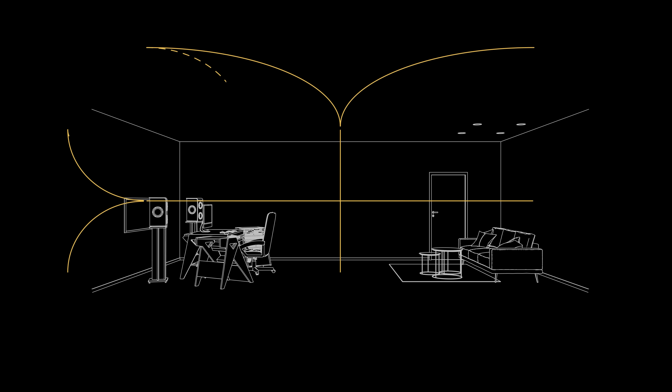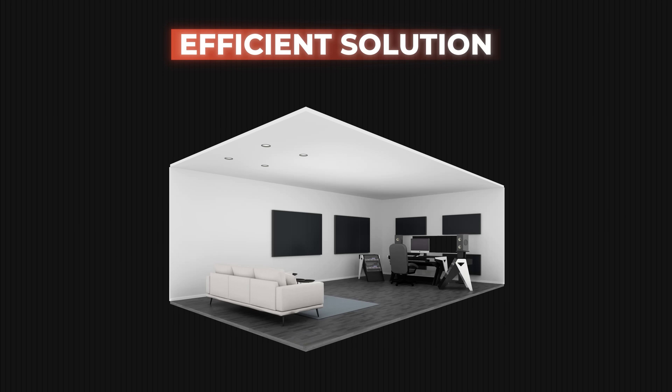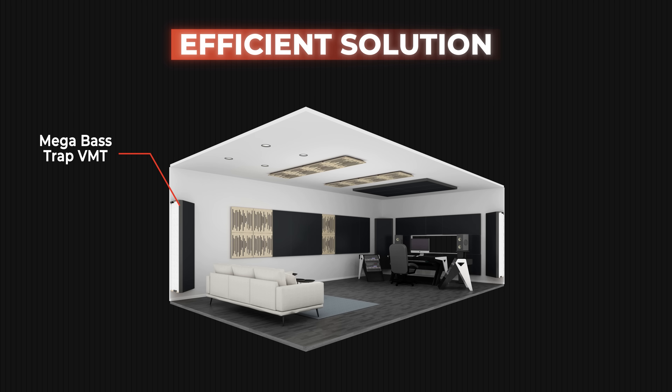Ever notice certain bass notes sound way too strong or disappear completely? That's caused by room modes, which amplify or attenuate low frequencies along room dimensions. These modes can be fixed with bass traps. For a simple, efficient solution, using Mega Bass Trap VMT in corners along with Flat Panels VMT with Vick Spacer Plus can help smooth things out and manage reflections and low frequencies.